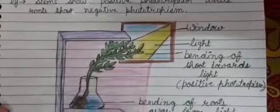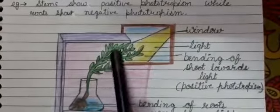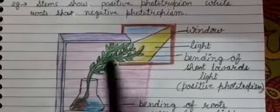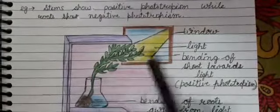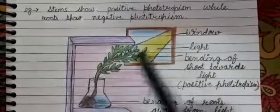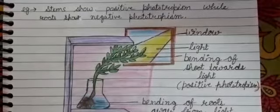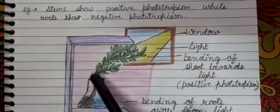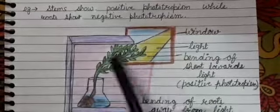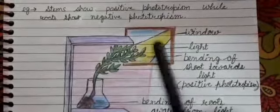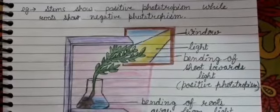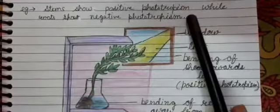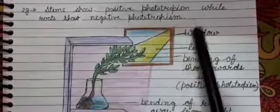For example, suppose you take a conical flask and keep it under a cardboard or in a wooden box. There is only a hole from which light comes into this box. After some days, you will observe that the stem starts moving towards that hole, while the roots start bending away from the light source. So stems show positive phototropism while roots show negative phototropism.